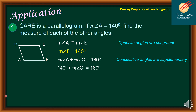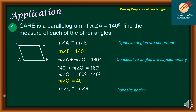The measure of angle A is congruent to the measure of angle E because opposite angles are congruent in a parallelogram, so angle E equals 140 degrees. It follows that the measure of angle A plus the measure of angle C equals 180 degrees because consecutive angles are supplementary. Substituting, 140 degrees plus measure of angle C equals 180 degrees, so angle C equals 40 degrees. Since opposite angles are congruent, angle R also equals 40 degrees.